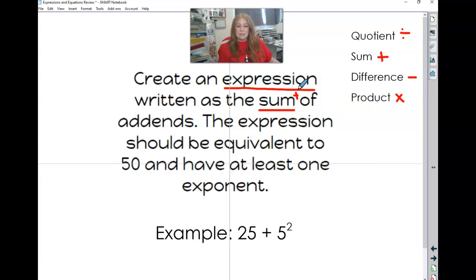So we're going to put the sums we need to add. So two addends. So some addends. The expression has to be equivalent to 50. But we're going to say it equals 50. We just have to know it does. And it has to have at least one exponent.